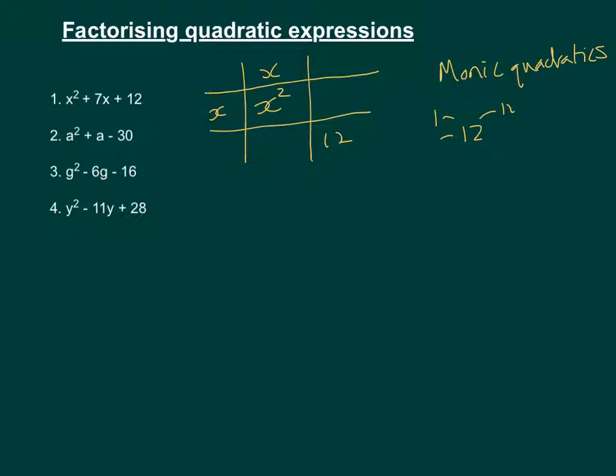So for 1 and 12 that won't work. 2 and 6, they add to make 8. 3 and 4, those will work. And it doesn't matter which way round I put these. So we have x plus 3 and x plus 4.